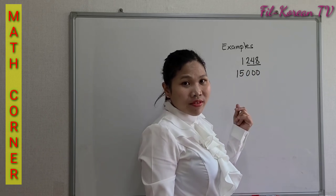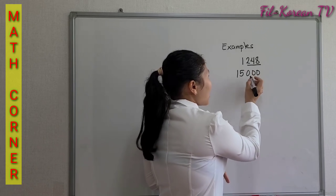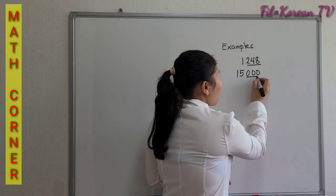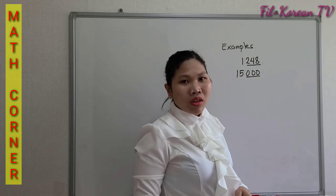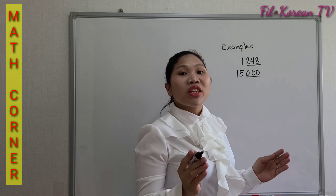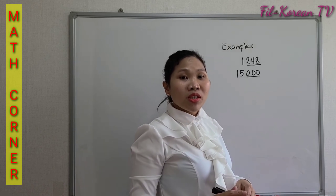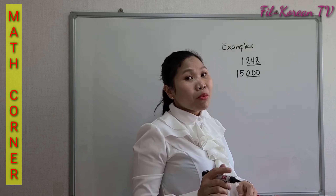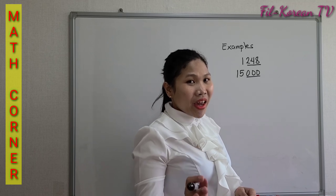Another example: 15,000. 15,000 ends in three zeros. And according to the rule, if a number ends in three zeros, a number is divisible by 8.